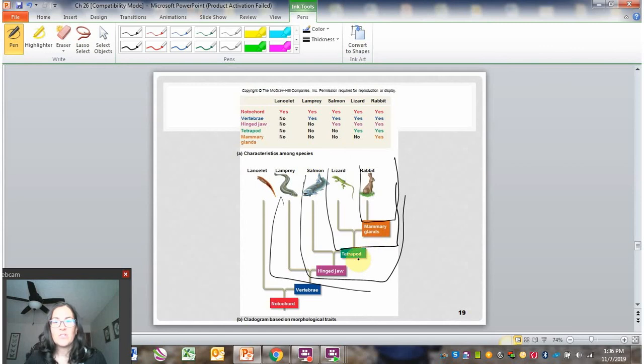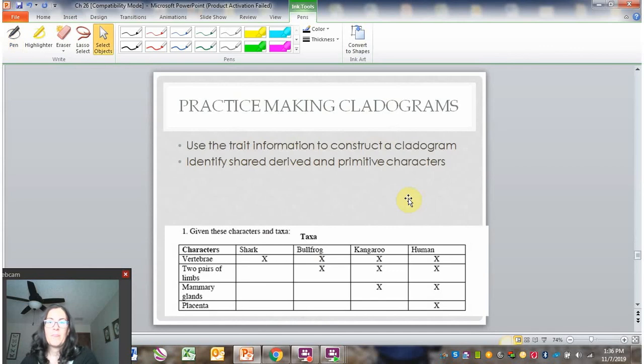The derived characters are these ones here for the different in-groups. The mammary glands are derived character for rabbits. Tetrapod is derived character for lizards and rabbits. Hinged jaws, the derived character for salmon, lizard, and rabbit. And vertebrae is the derived character for lamprey, salmon, lizard, and rabbits.